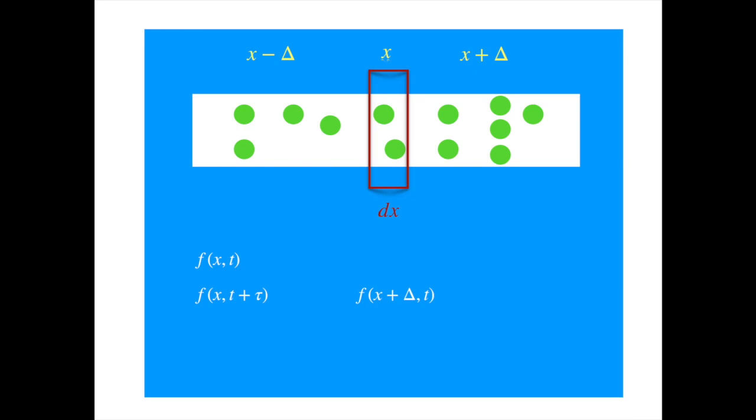So a particle will move from x plus delta to x if it experiences a displacement of minus delta. The probability of which we can write as follows. And similarly, a particle will move from x minus delta to x if it experiences a displacement of delta, the probability of which we can write as phi of delta.